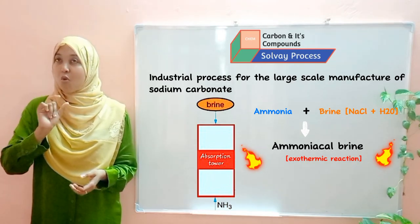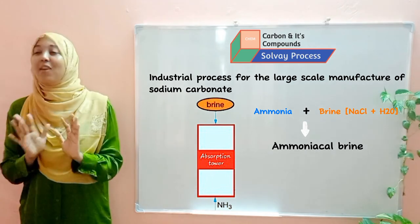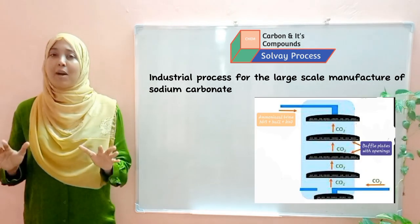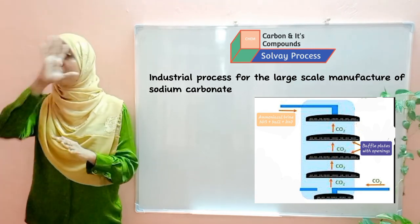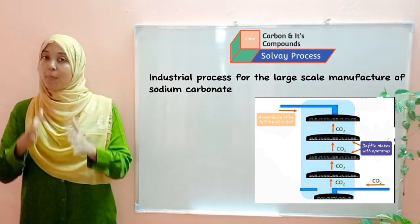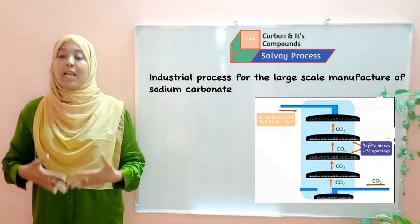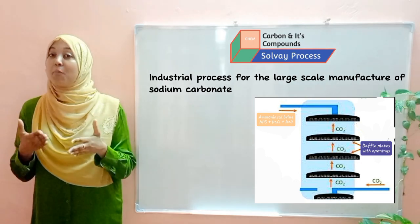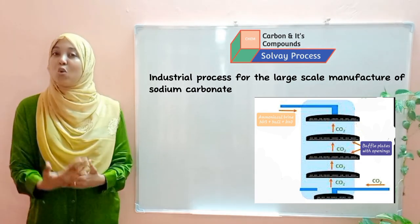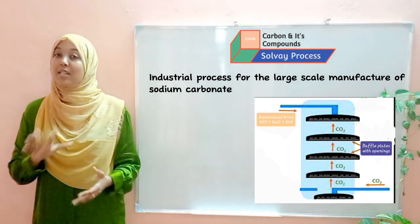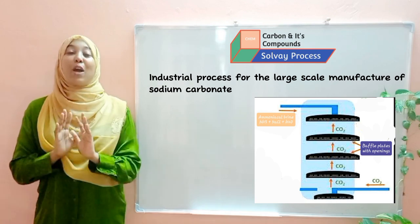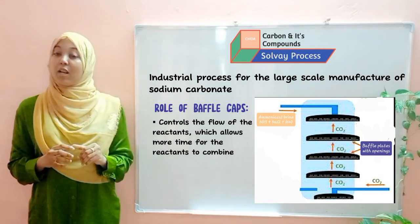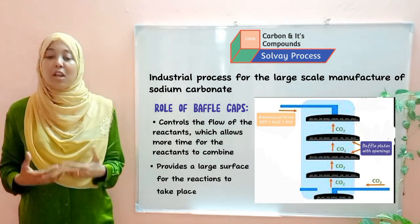This process is highly exothermic — it leads to the production of a lot of heat energy, which we'll discuss more later. One fascinating thing about the absorption tower is that it's fitted with baffle cups. Baffle cups are structures that are roughly spherical or circular in shape with small openings running through them. They slow down the movement of the reactants, allowing more time for the reactants to react, making the process more efficient. They also provide a large surface area for the reactions to take place.